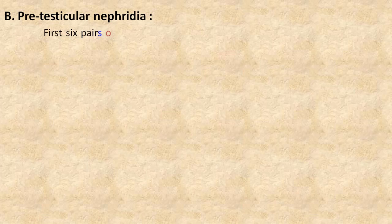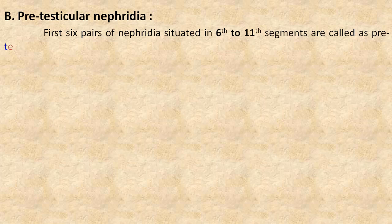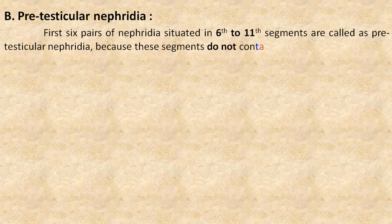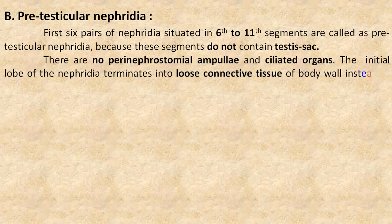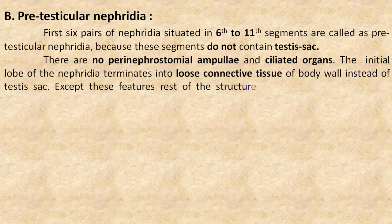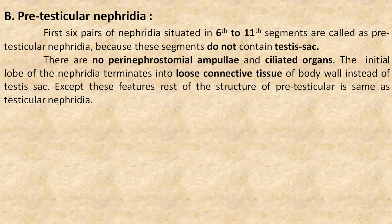Now we will see pretesticular nephridia. The first 6 pairs of nephridia situated in segments 6 to 11 are called pretesticular nephridia. Because these segments do not contain a testis sac, there are no perinephrostomal ampulla and ciliated organs. The initial lobe of these nephridia terminates into the loose connective tissue of the body wall instead of the testis sac. Except for these features, the rest of the structure of pretesticular nephridia is the same as testicular nephridia.